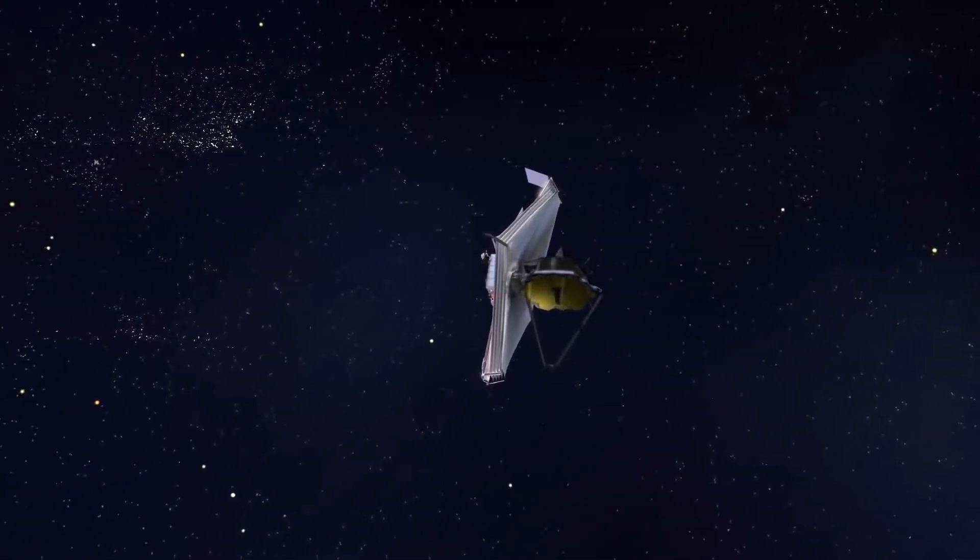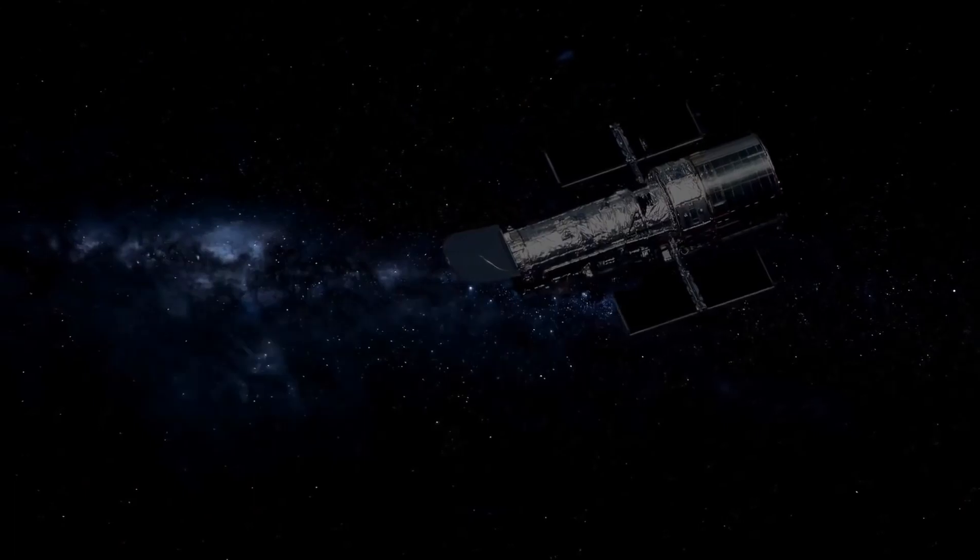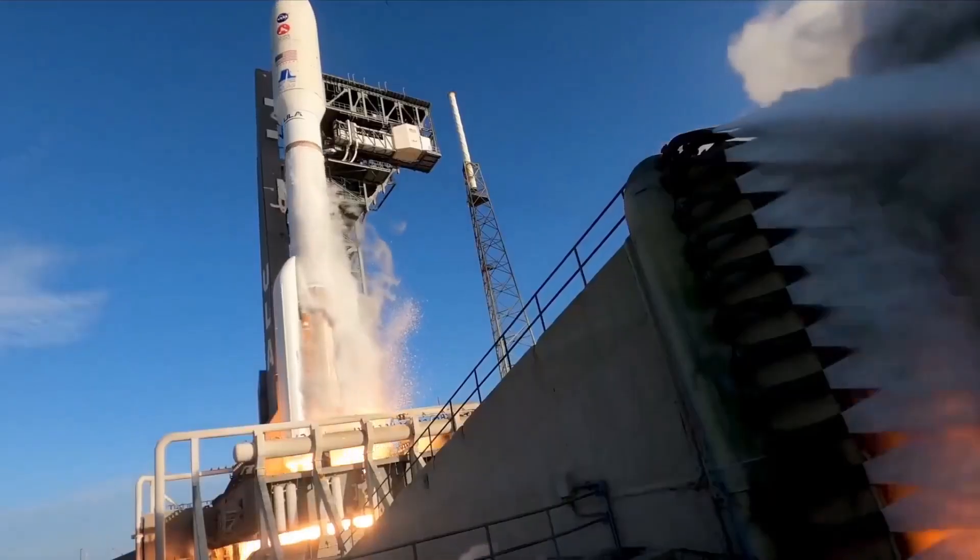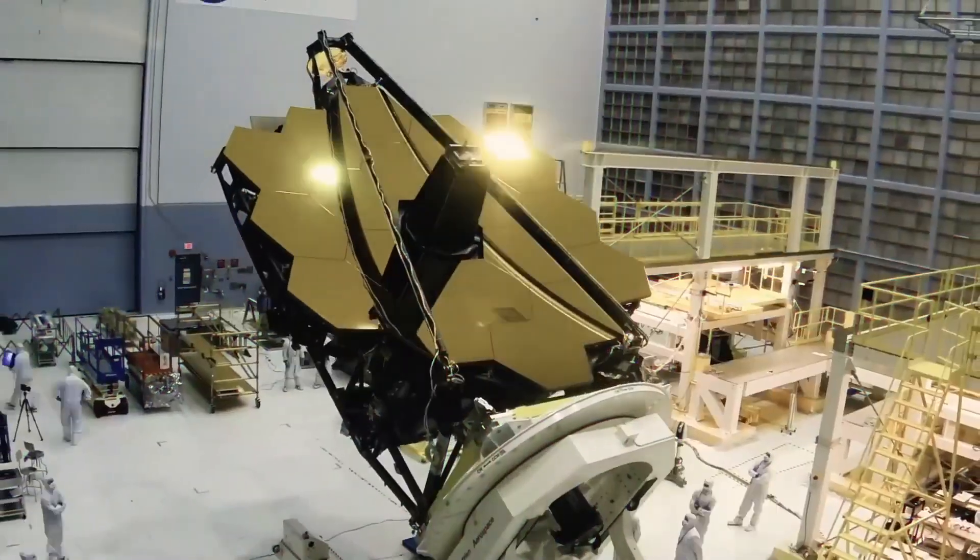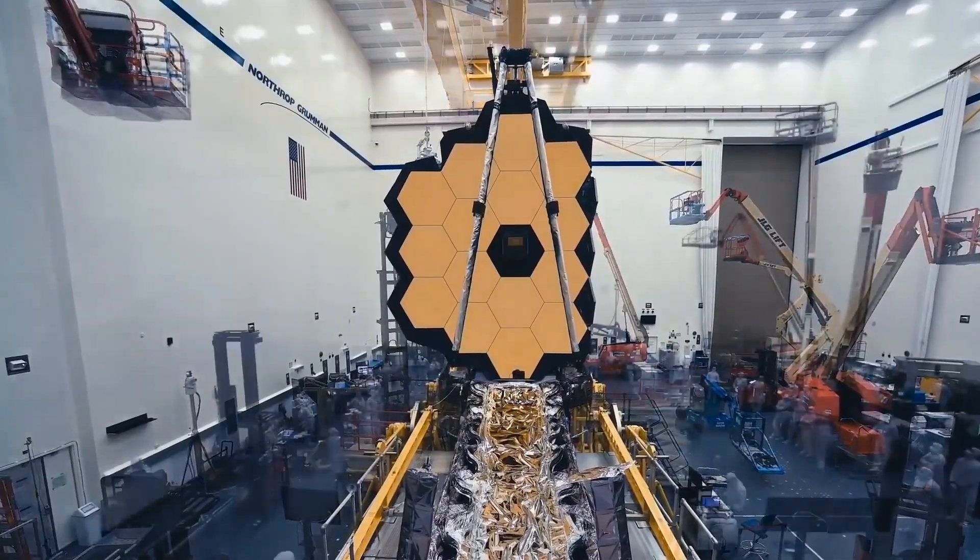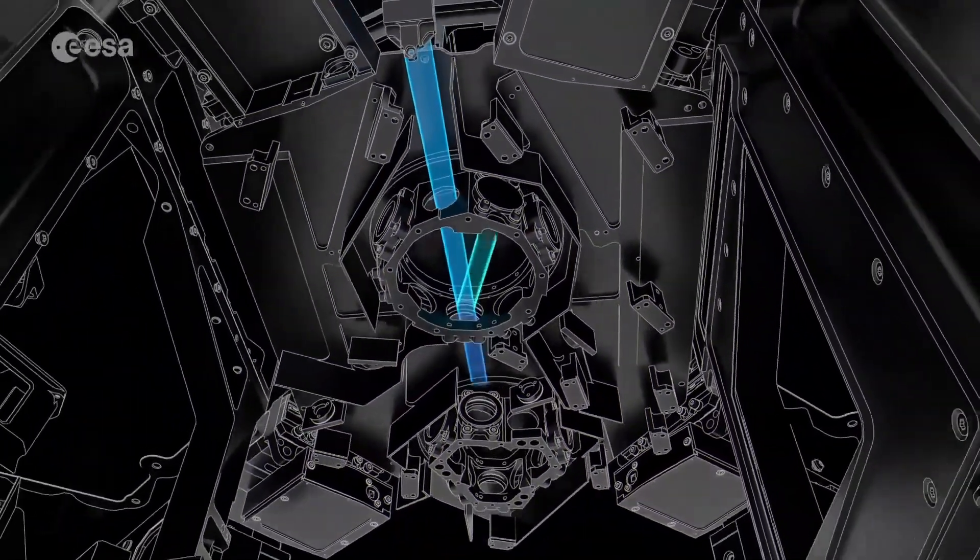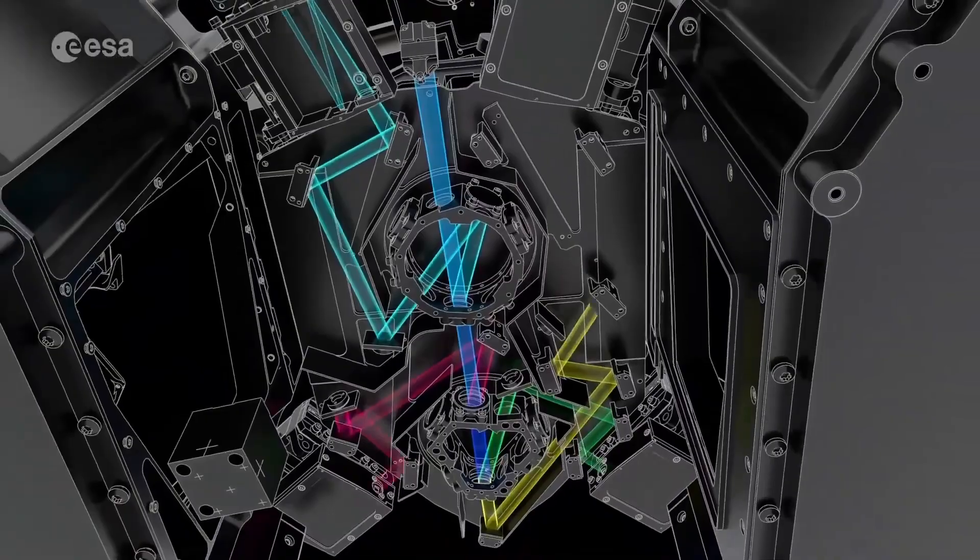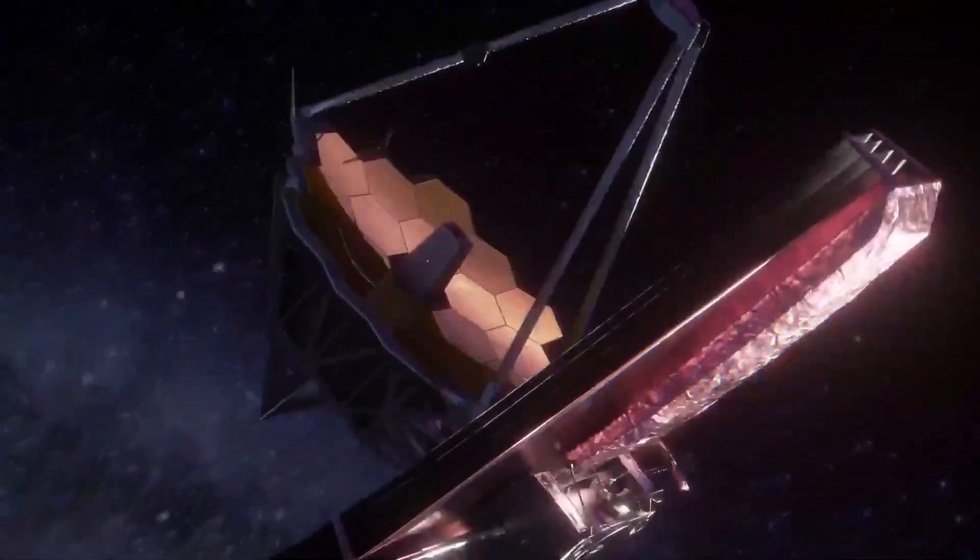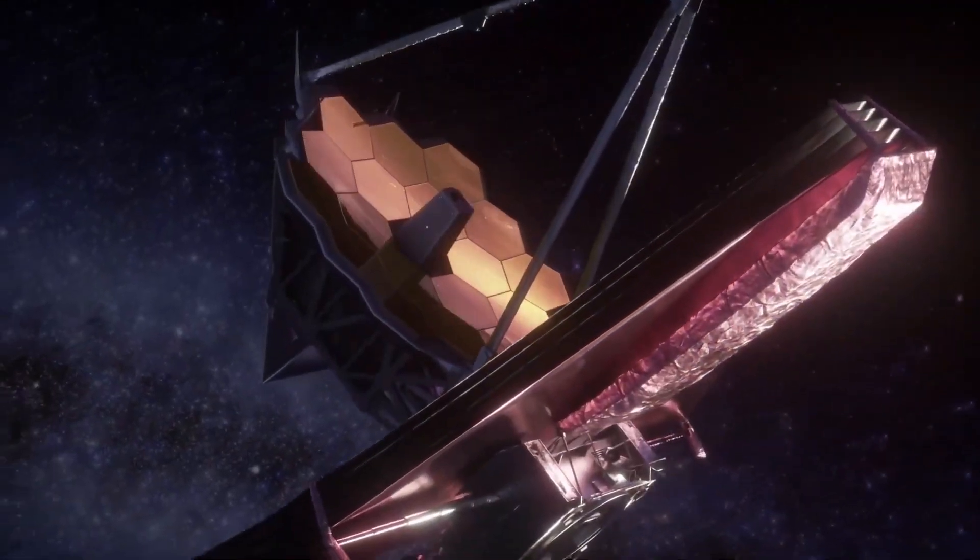The 6.4 meter diameter massive primary mirror is a key component. 18 smaller segments must perfectly line up. A single human hair strand is 1000 times thicker than the gold coating that covers the segments. 24 karat gold, which weighs less than two ounces, reflects infrared light more effectively than other metals. The infrared spectrum is just outside the range of light humans can see. The mirrors are composed of beryllium rather than pure gold.